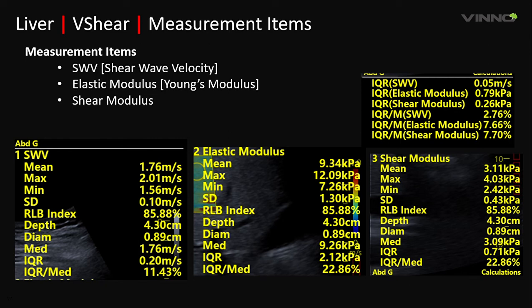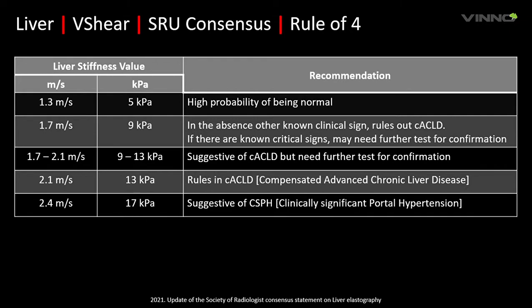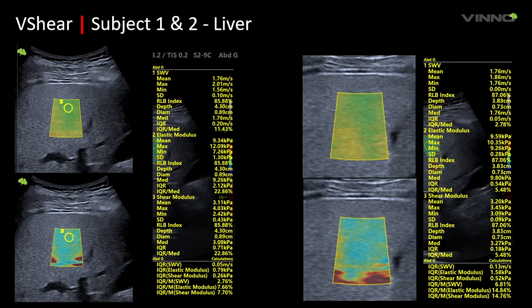This shows the rule of four as per the SRU consensus on NAFLD. A measurement of 1.3 m/s indicates high probability of being normal. 1.7 m/s in the absence of other known clinical signs rules out compensated advanced chronic liver disease; if clinical signs are present, further testing may be needed. 1.7 to 2.1 m/s is suggestive of compensated advanced chronic liver disease but needs confirmatory testing. Above 2.1 m/s rules in compensated advanced chronic liver disease. At 2.4 m/s and above, it is suggestive of clinically significant portal hypertension.